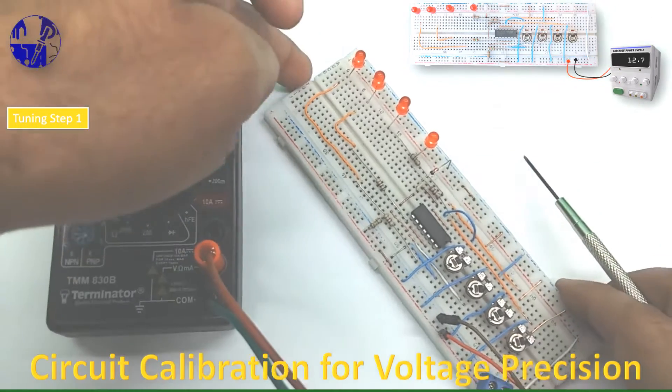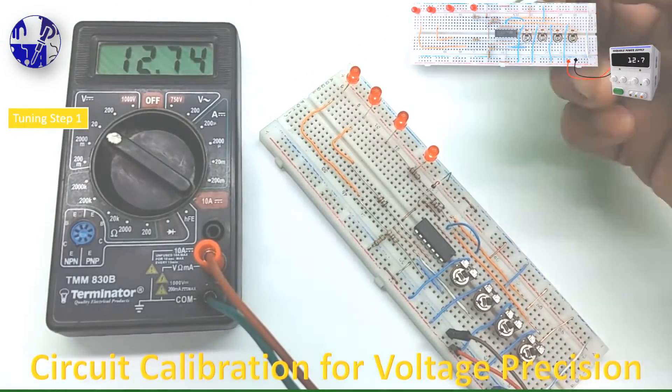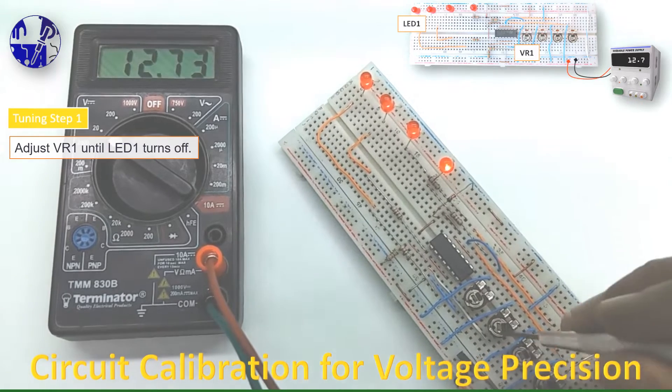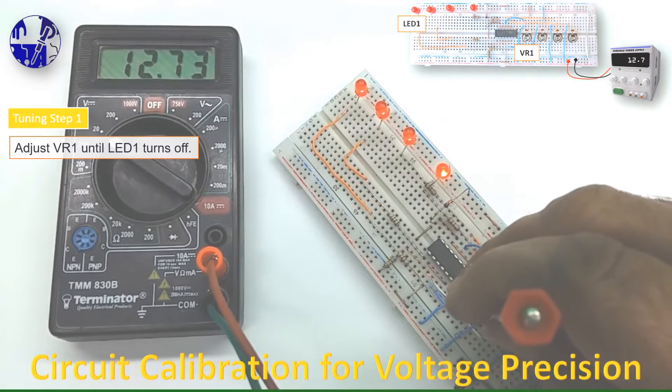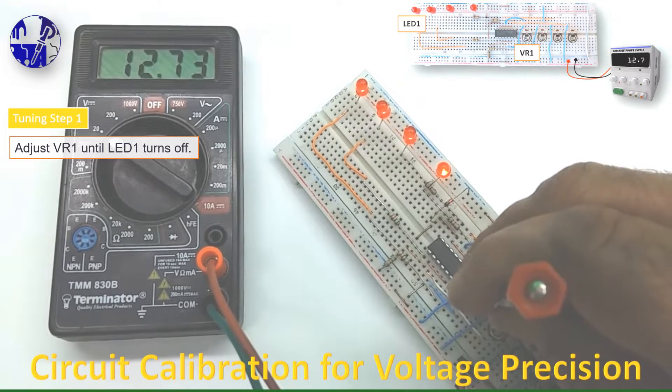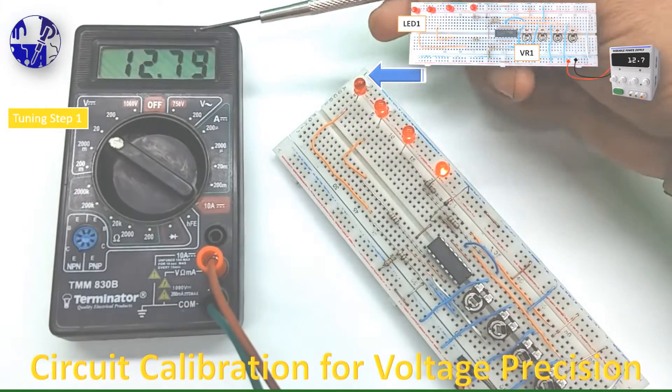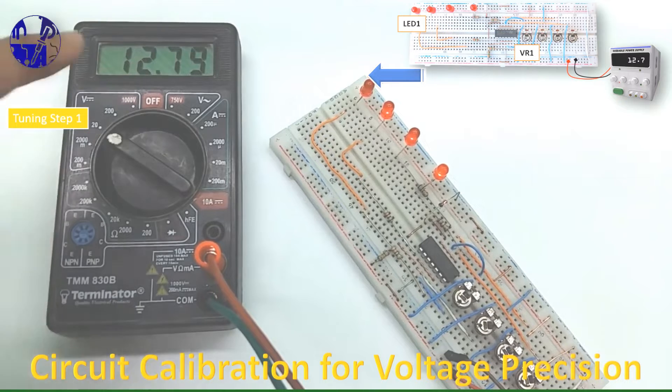We only connect the variable power supply for circuit tuning. Now adjust VR1 until LED 1 turns off. When the battery voltage falls below 12.7 volts, LED 1 will turn off, signaling a voltage drop below 12.7 volt.